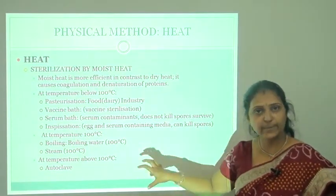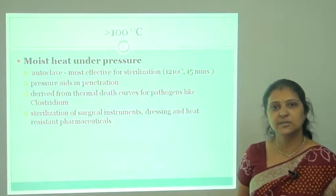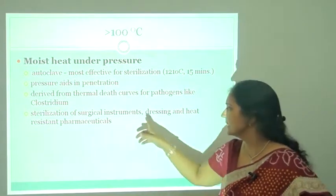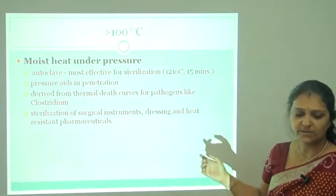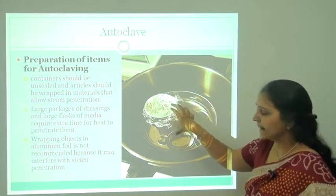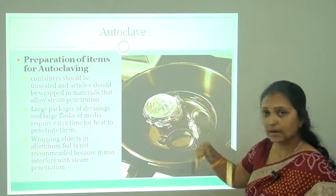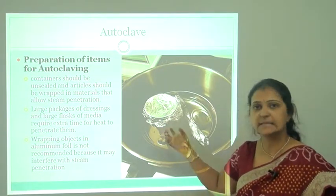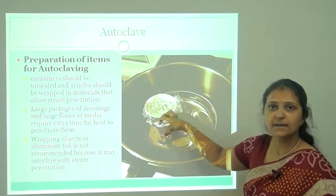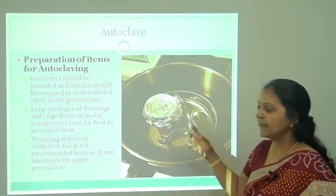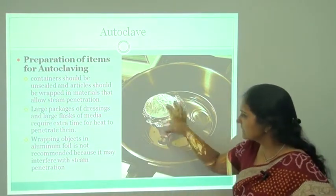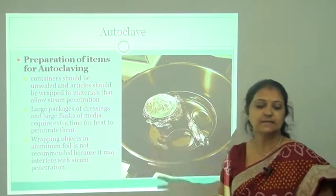The autoclave is the best means for sterilization by moist heat — it is the most effective. It is used for sterilization of surgical instruments, dressings, and heat-resistant pharmaceuticals. Items can be wrapped or covered and placed into the autoclave. The moist heat or steam penetrates the object, the microorganisms are denatured, and the protein and other structures of the microorganisms are disrupted so all microorganisms present in the covered object are killed.